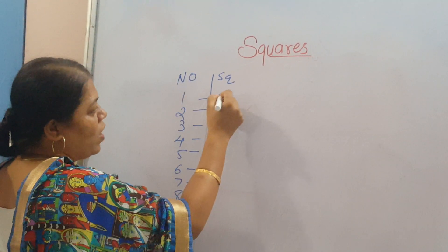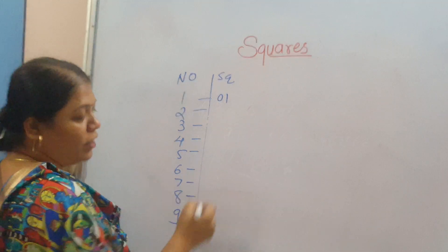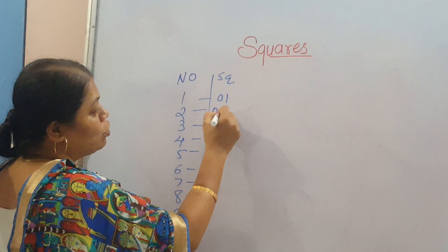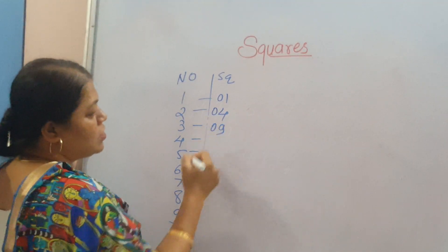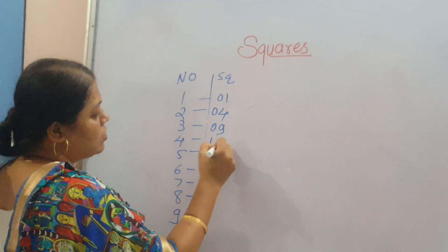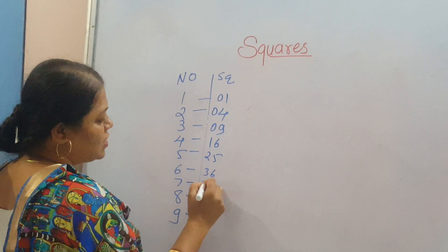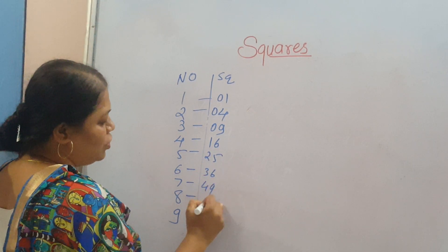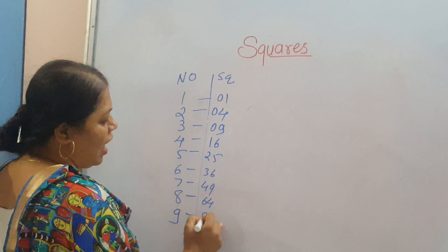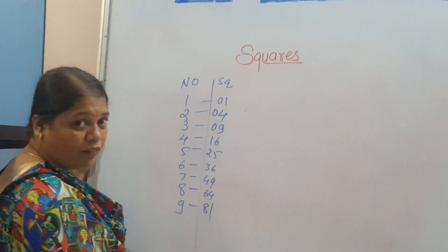1 squared: 01. 2 squared: 04. 3 squared: 09. Then 16, 25, 36, 49, 64, and 81. These are the nine single-digit squares you need to remember.